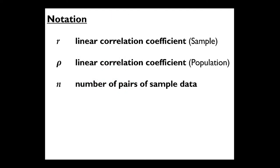A few notations you need to be familiar with. First, lowercase r is the linear correlation coefficient for a sample. This Greek letter rho (it's not the letter P) represents the linear correlation coefficient for a population. And lowercase n is the number of pairs of sample data.